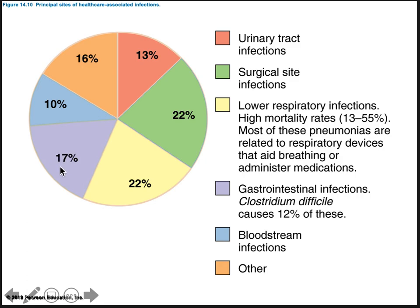We also have a high amount of gastroenteritis, and one of the most difficult to treat is Clostridioides difficile — 'difficile' because it's difficult. Twelve percent of all gastrointestinal infections are C. difficile. We also have bloodstream infections, which could be due to IVs or wounds becoming infected.